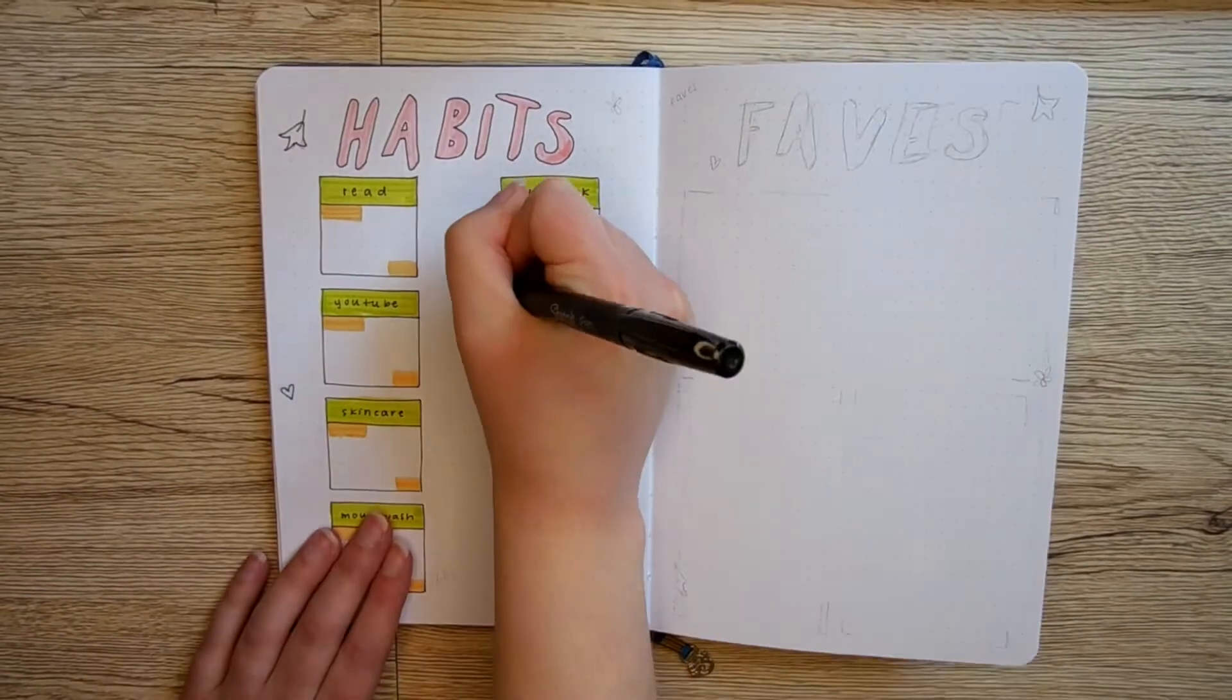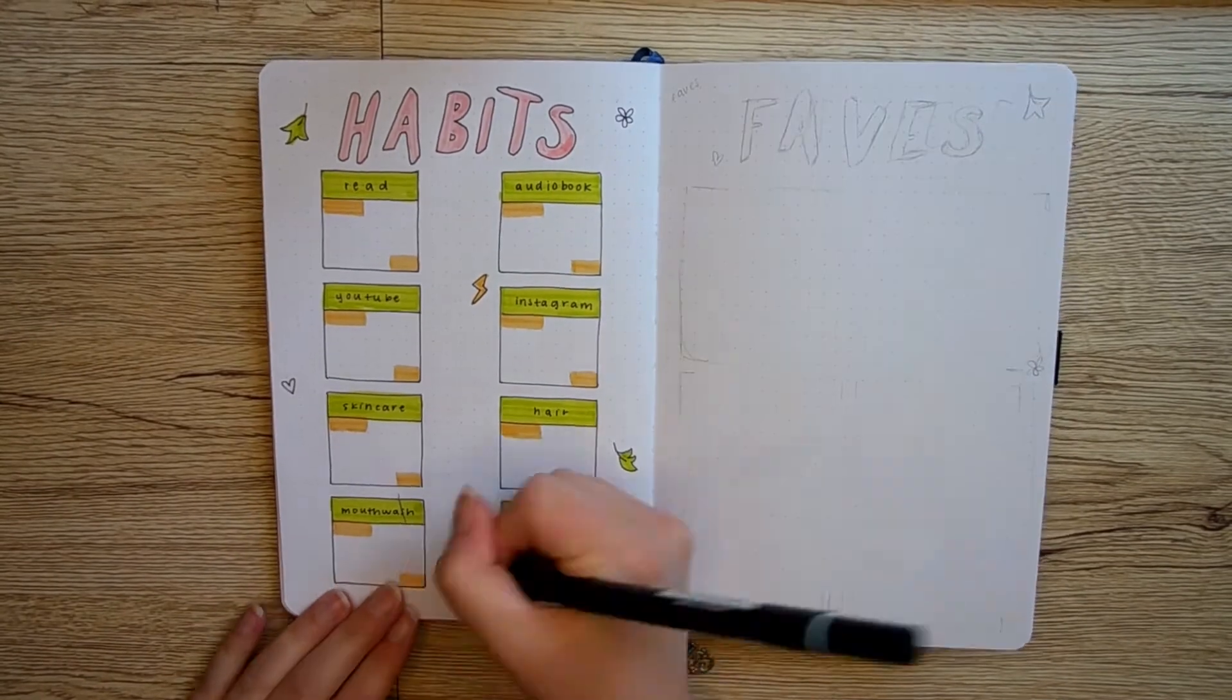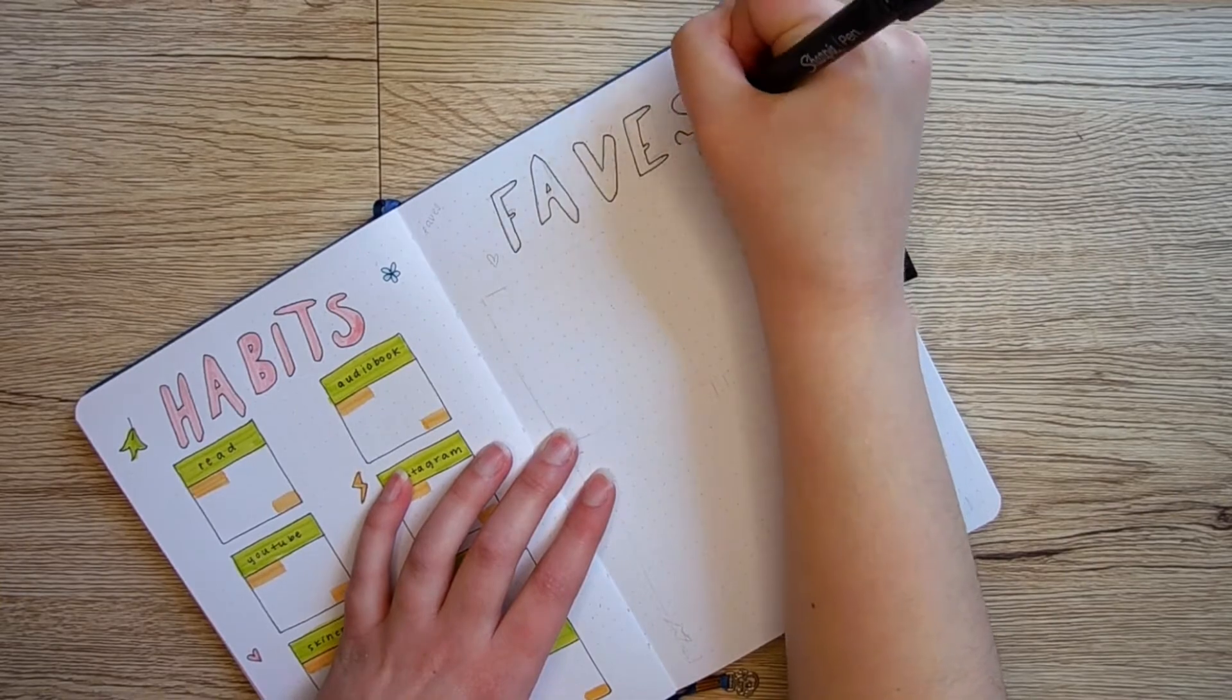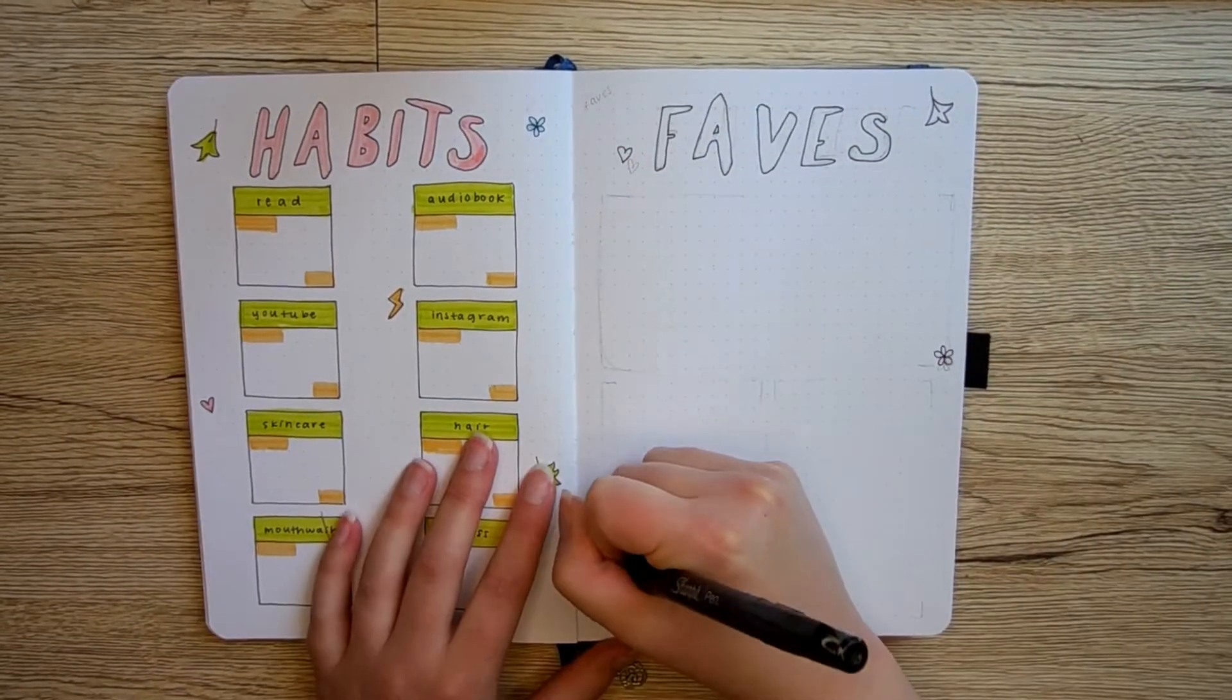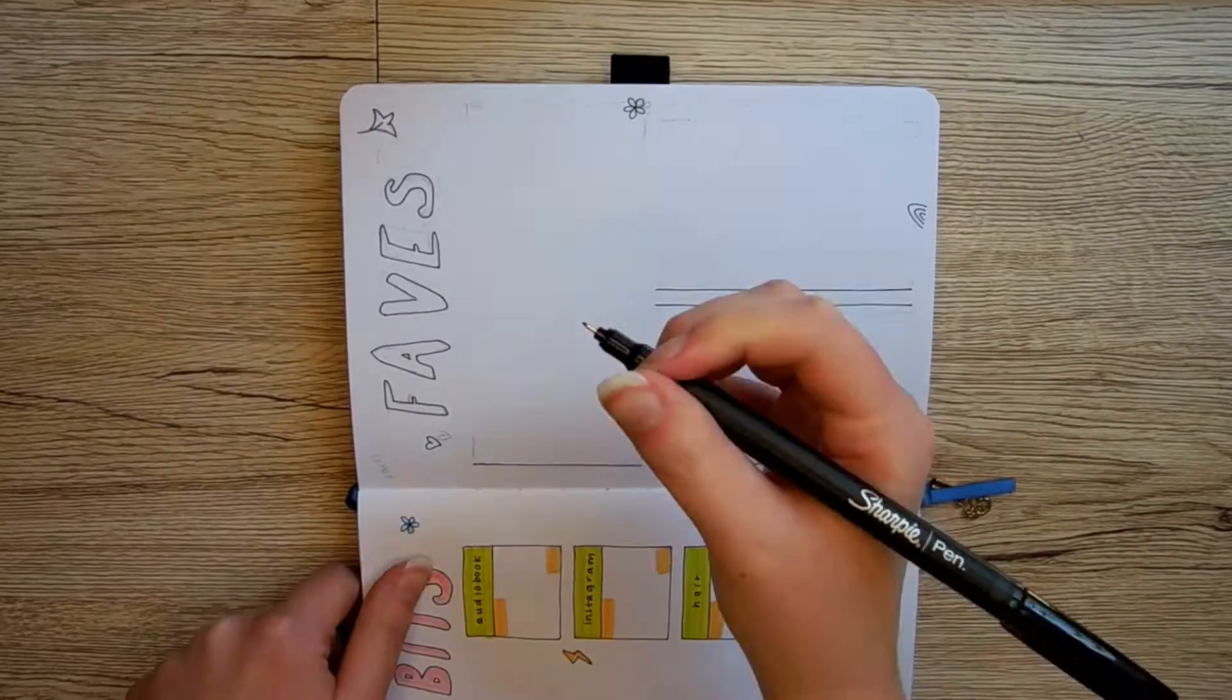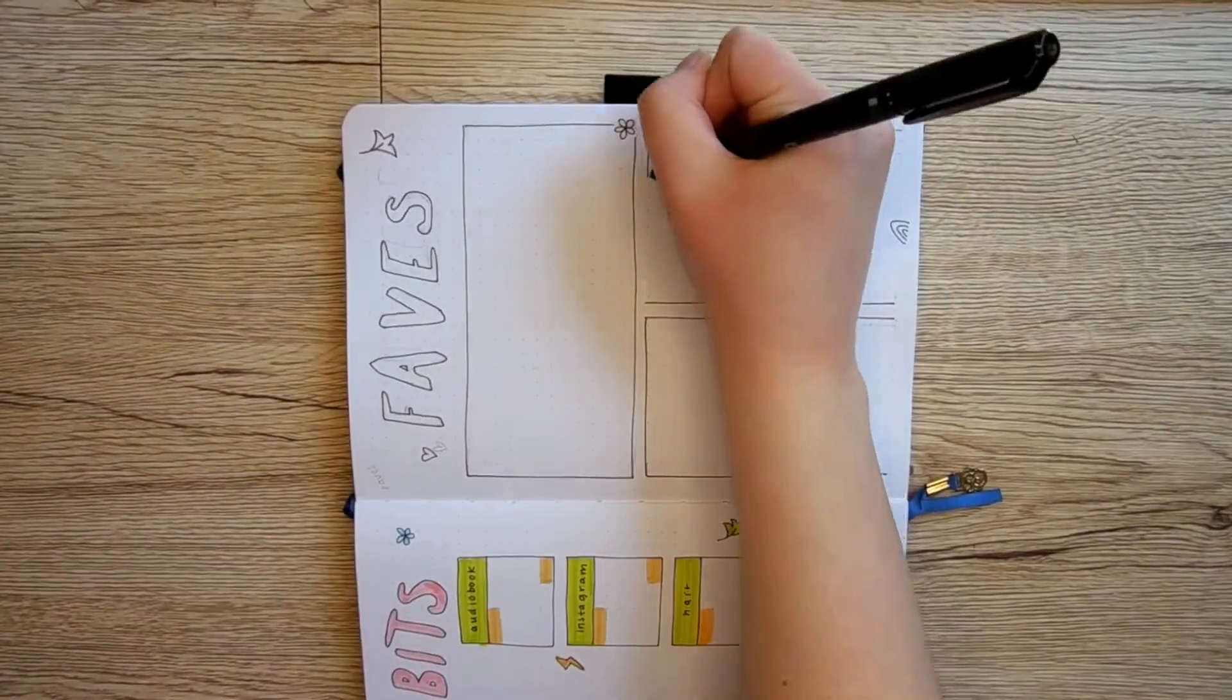Now on the right-hand side, I'm writing 'faves,' so this is going to be my monthly favorites page. I'm just splitting the page up into three different sections: one for music, one for entertainment, and one for lifestyle. Anything that I enjoyed throughout the month of June that fits into those categories, I will write it down, and then it's really fun to be able to reflect on the different things I was enjoying throughout the year. Once again, just doing the black square boxes to kind of mimic the comic panels and doing the doodles and everything like that.